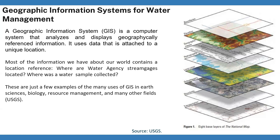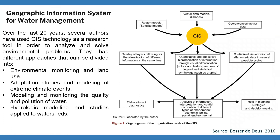For example, in this picture we can appreciate different layers that compose the national map of the United States. We can find layers related with boundaries, elevation, a digital elevation map, geographic names, hydrography, land cover, ortho imagery, structures, and transportation networks.